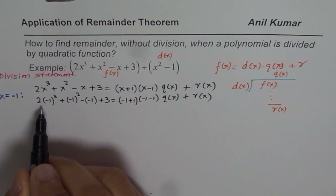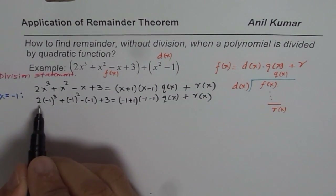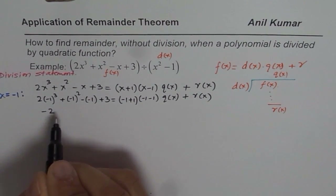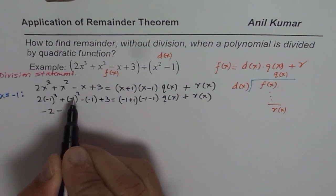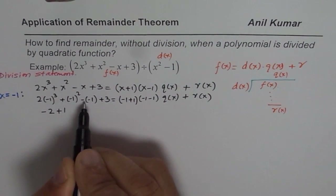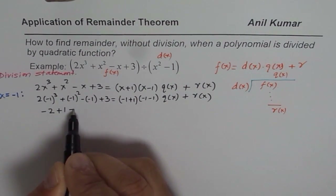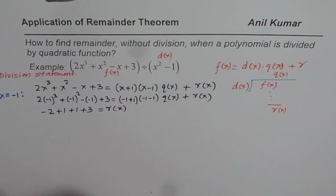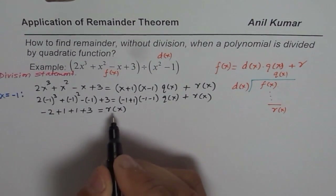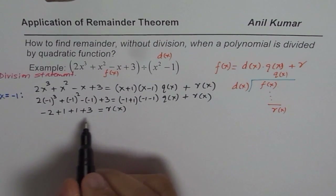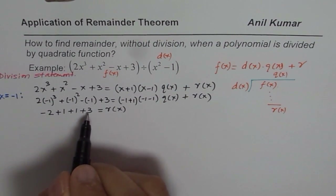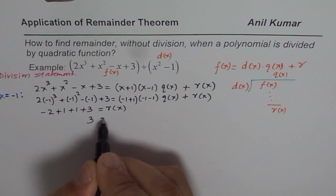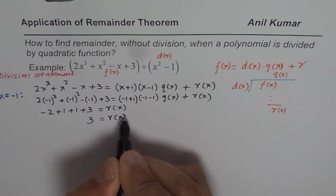On the left side, we can calculate: (-1)³ is -1, so we get -2, plus 1, plus 1, plus 3, equals r(x). So the remainder r(-1) equals -2 + 1 + 1 + 3, which is 3. So r(x) gives us 3. That is equation 1.